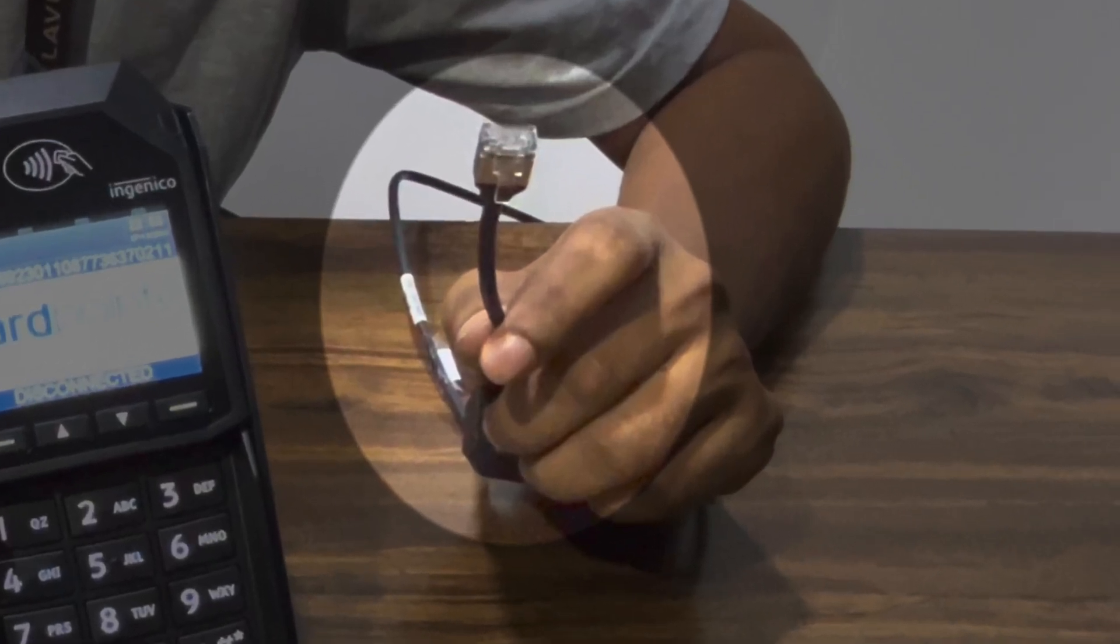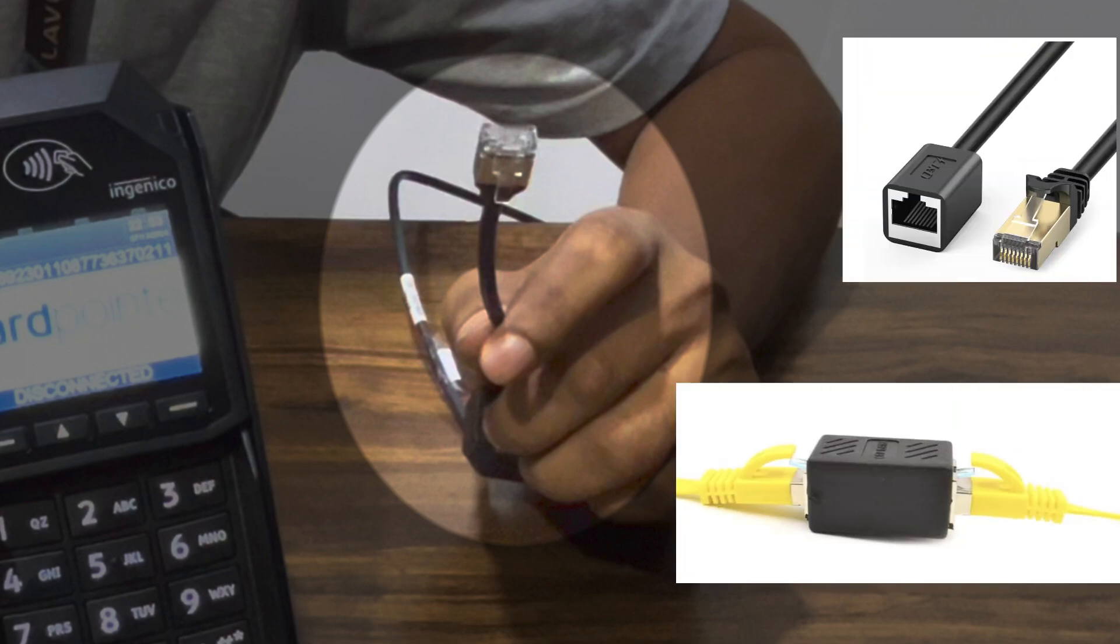You'll notice that the cable coming from the card reader is really short. It may be necessary for you to use an ethernet extension cable or adapter to connect two different ethernet cables together.